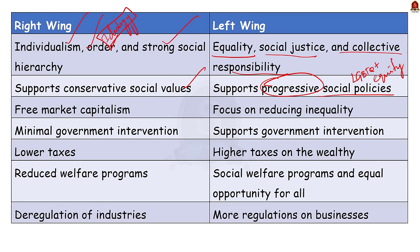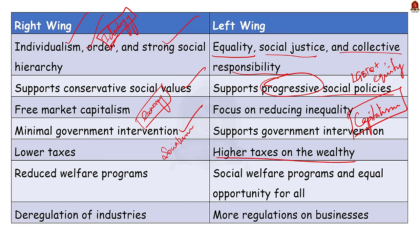Now let us look at their ideological differences regarding the economy. The right wing supports free market capitalism and minimal government intervention in the economy. It also favors low taxes, reduced welfare programs, and deregulation of industries. The left wing, on the other hand, supports government intervention in the economy to reduce inequality, provide social welfare programs, and ensure equal opportunities for all. It also advocates for higher taxes on the wealthy and more regulations on businesses to protect workers and consumers.